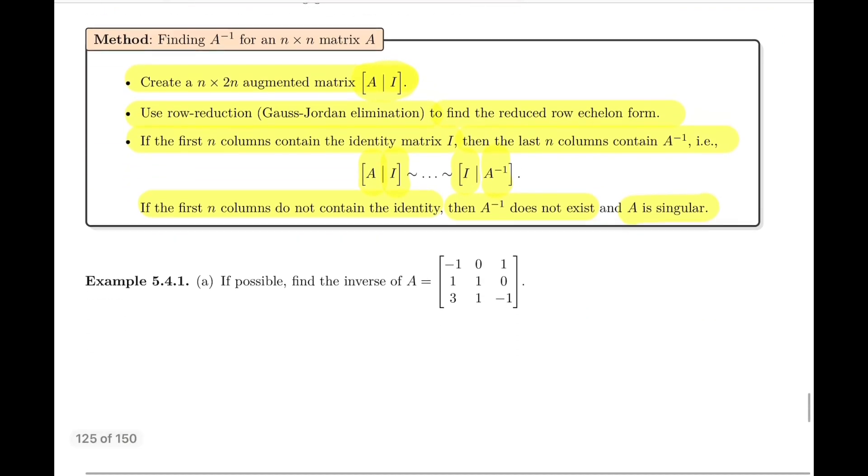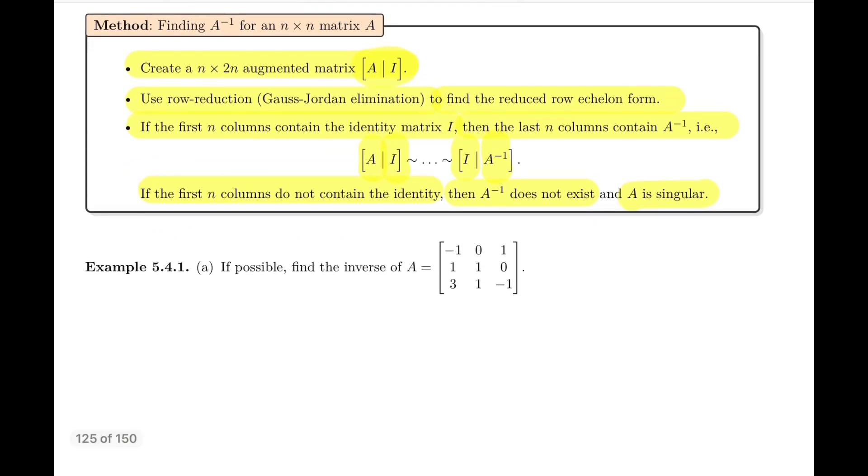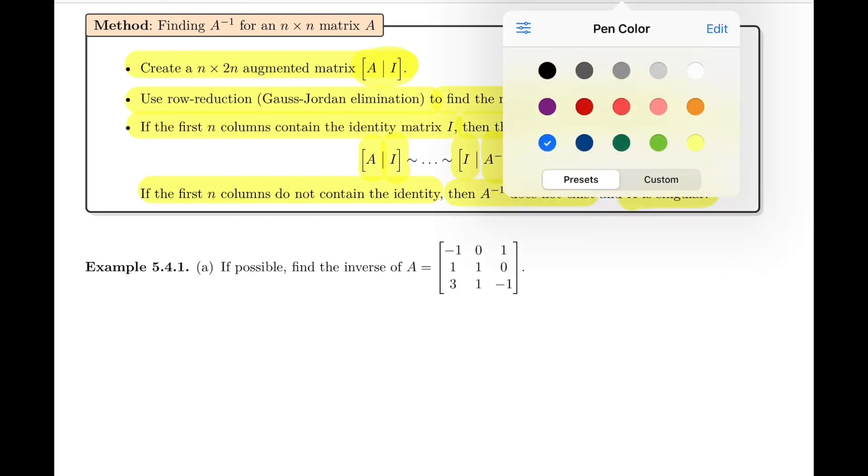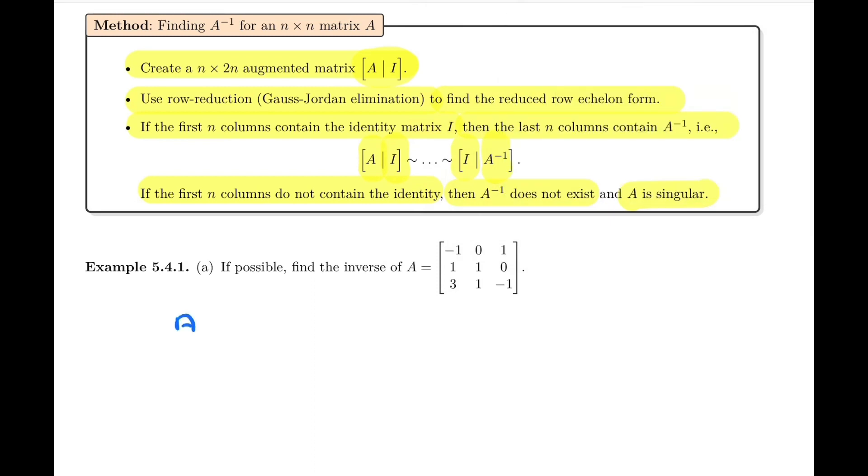Let's apply the algorithm right away - the method I should say - to finding the inverse of this 3 by 3 matrix. Let's start with the notation that we just introduced, which was the matrix A|I.